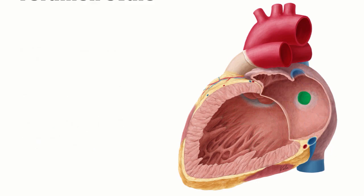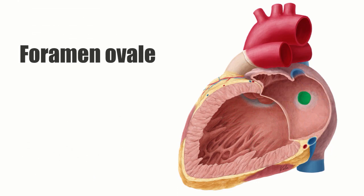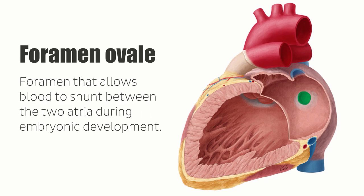The main anatomical structure of note is the foramen ovale, which is a foramen within the atrial walls that allows blood to shunt between the two atria during embryonic development. Normally, around the time of birth, this hole in the cardiac wall closes. Otherwise, it is known as a congenital heart defect named patent foramen ovale. It is not, however, generally problematic in child or adulthood.